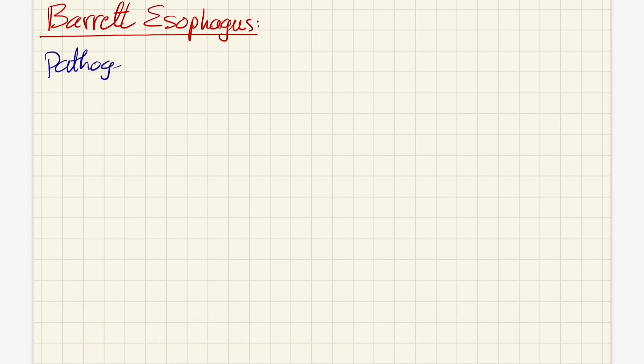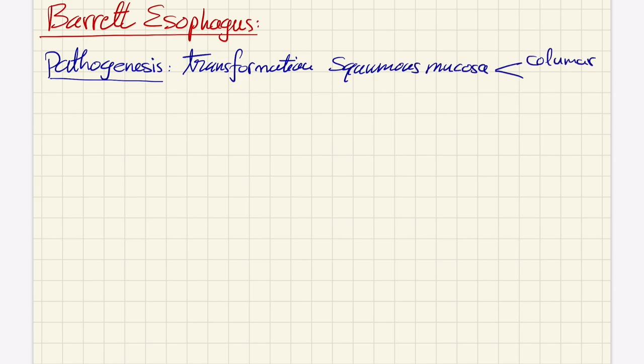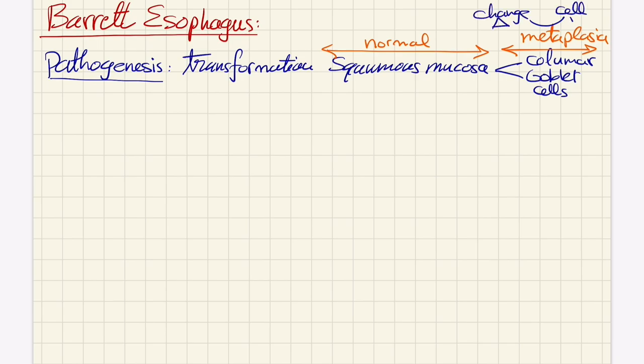Barrett's esophagus - we'll start with pathogenesis. It's a transformation because of chronic GERD that causes stress on the squamous cells and forces transformation into columnar cells with goblet cells. This transformation is a change of the type of cells. This is what we call metaplasia - a total change of the cell type.